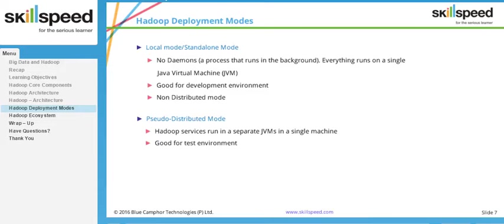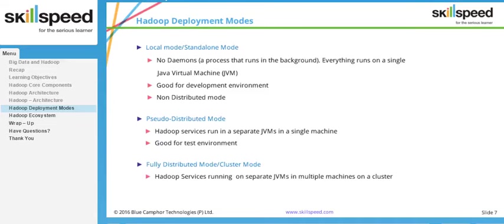The last mode is called fully-distributed mode, and this is the mode we actually see in production. In fully-distributed mode, Hadoop daemons run separately on machines depending on the role they play. For example, if one machine is configured as the NameNode, only the NameNode daemon runs on it. If another machine is configured as a DataNode, only the DataNode and TaskTracker daemons run there. A cluster of machines is set up in master-slave architecture with separate masters and slaves, used in production environments with N number of machines forming a Hadoop cluster.